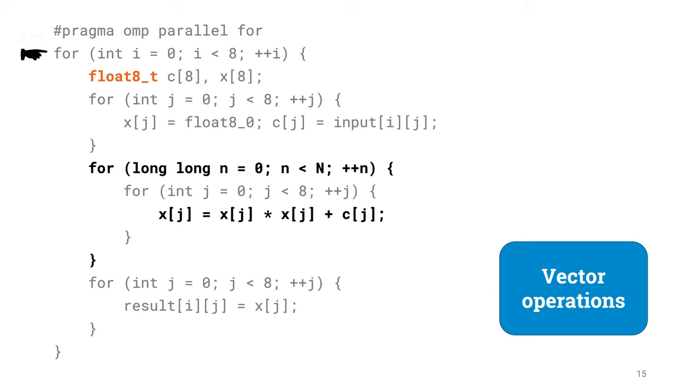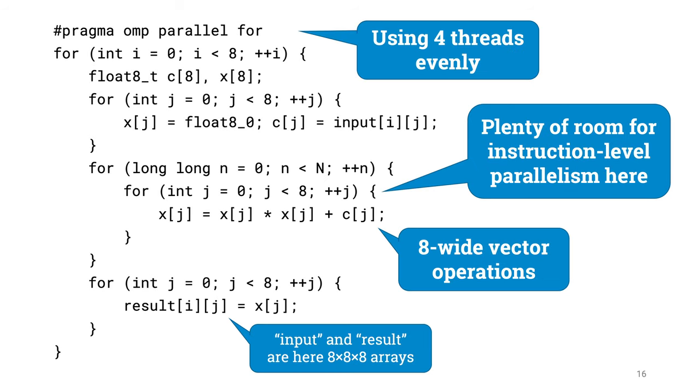Now the outermost loop only needs to take eight iterations, as each iteration calculates eight by eight results. So now we have got our fully parallelized solution, able to benefit from multiple CPU cores, superscalar pipeline arithmetic units, and vector operations. Is it fast?